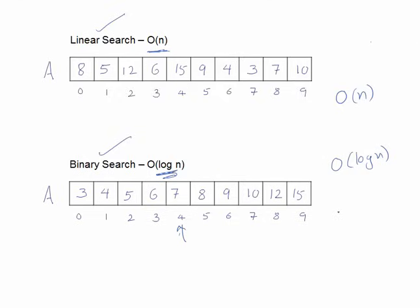Now we want a search method which takes just constant time. From O(n) we have moved to O(log n), and from O(log n) we want to move on to O(1). This is the requirement which introduces the hashing technique.